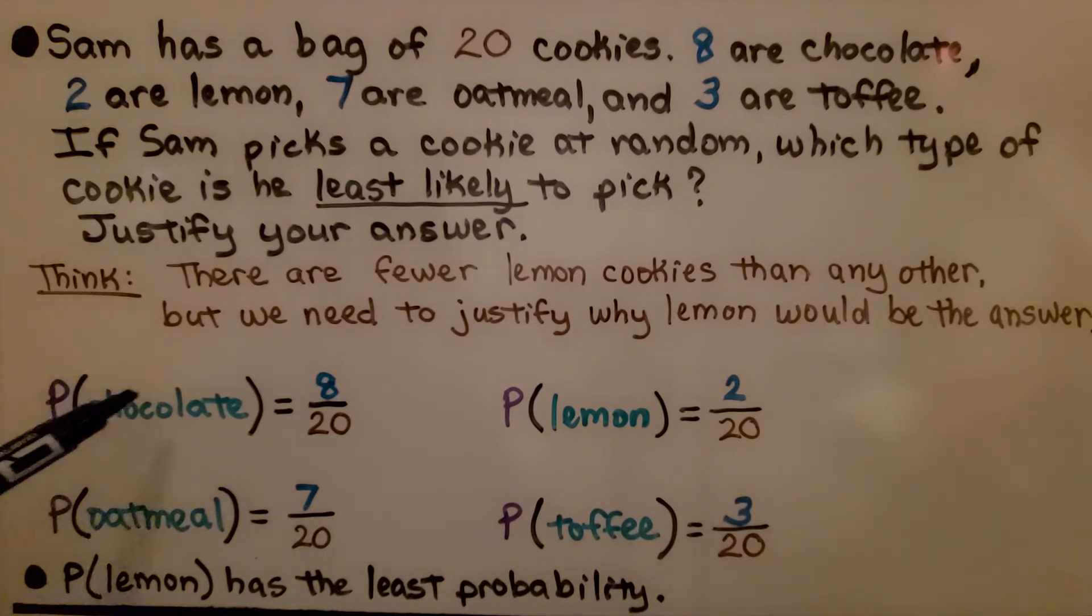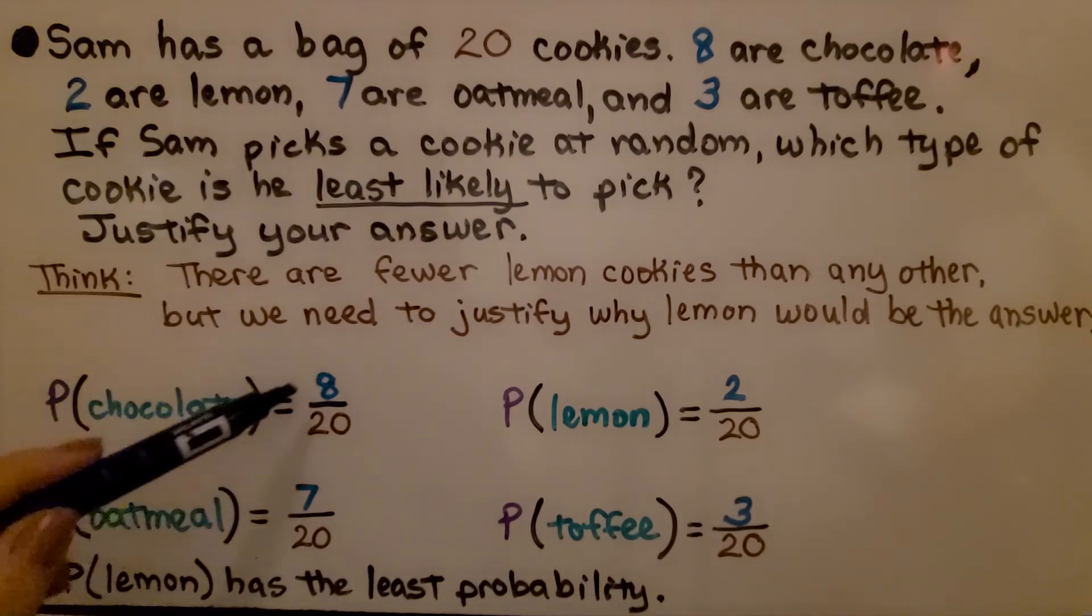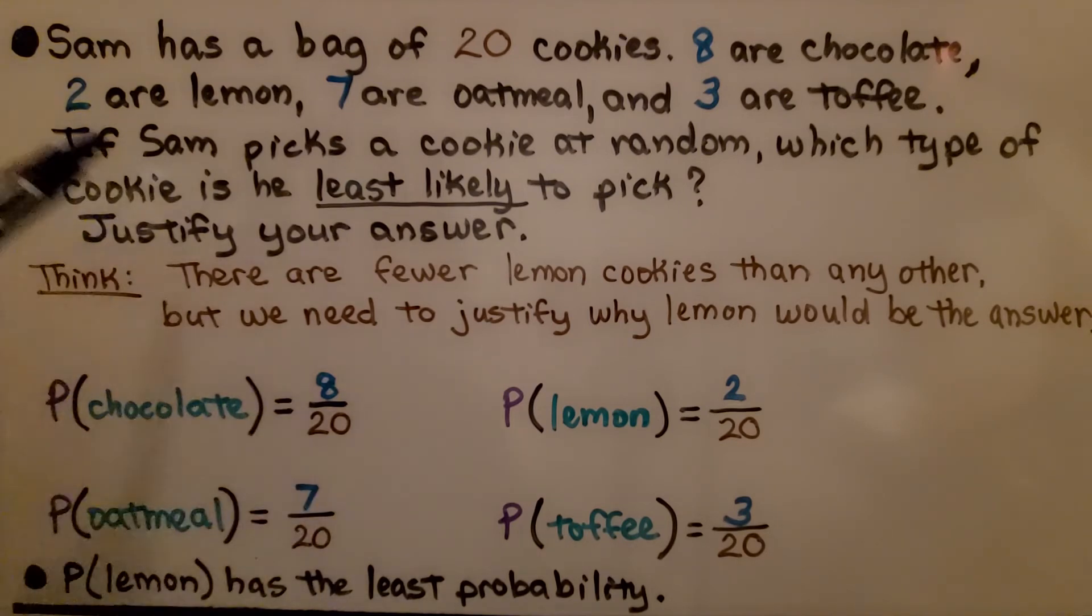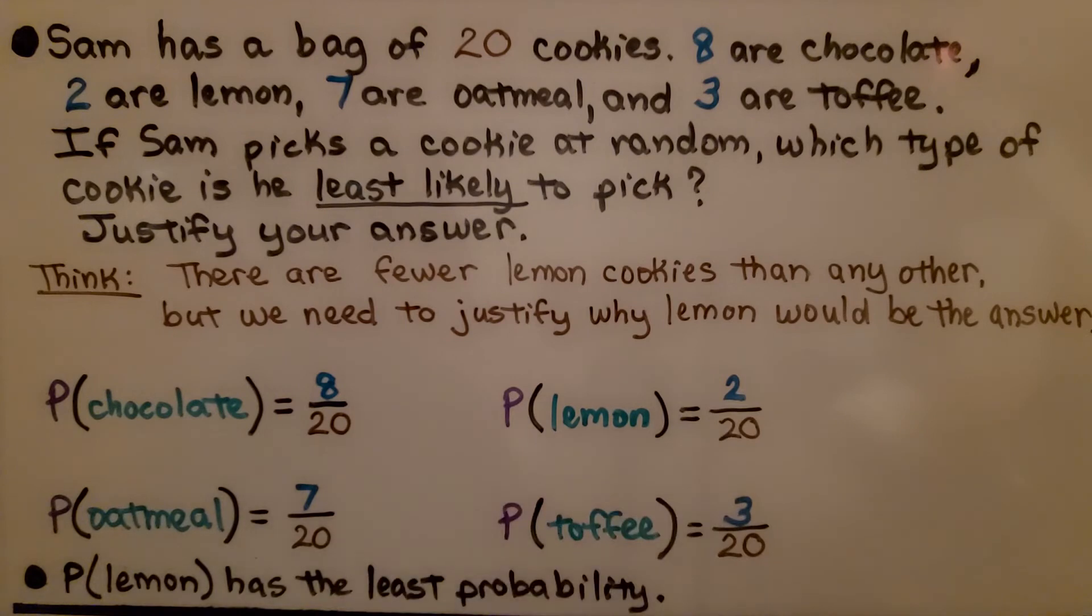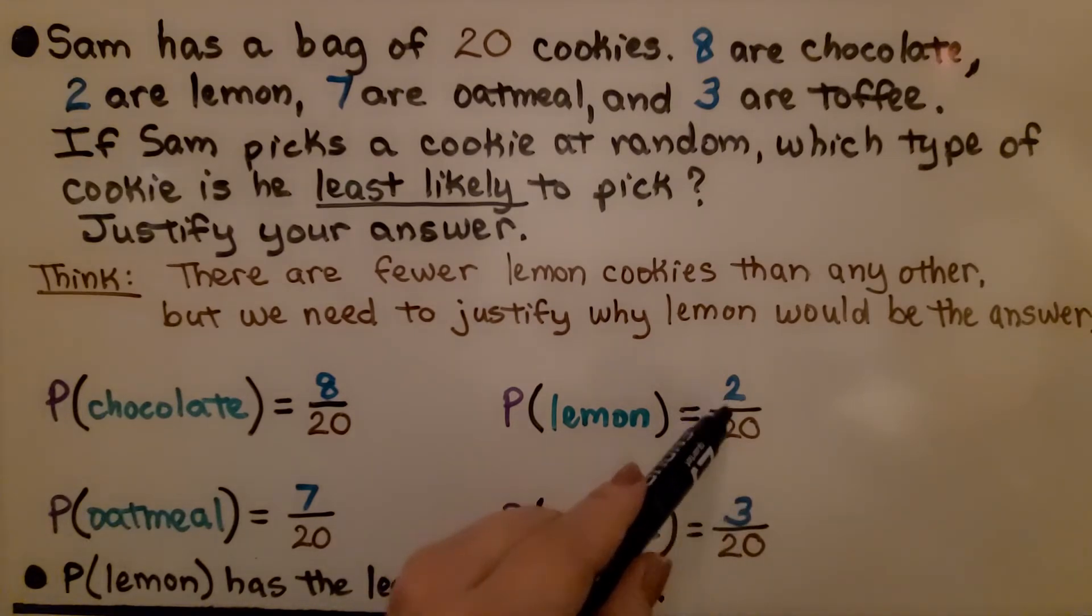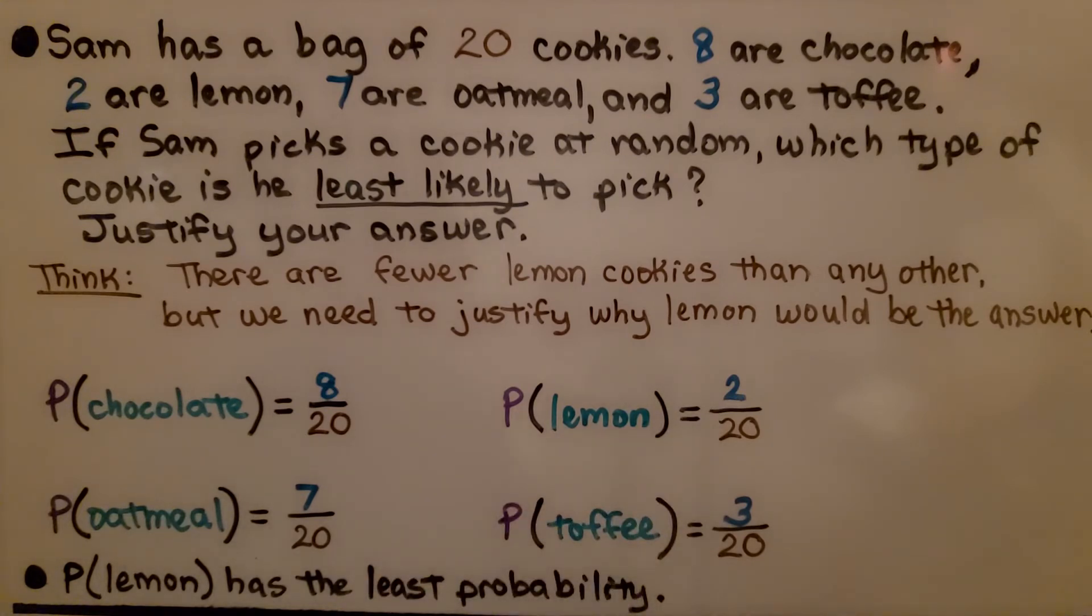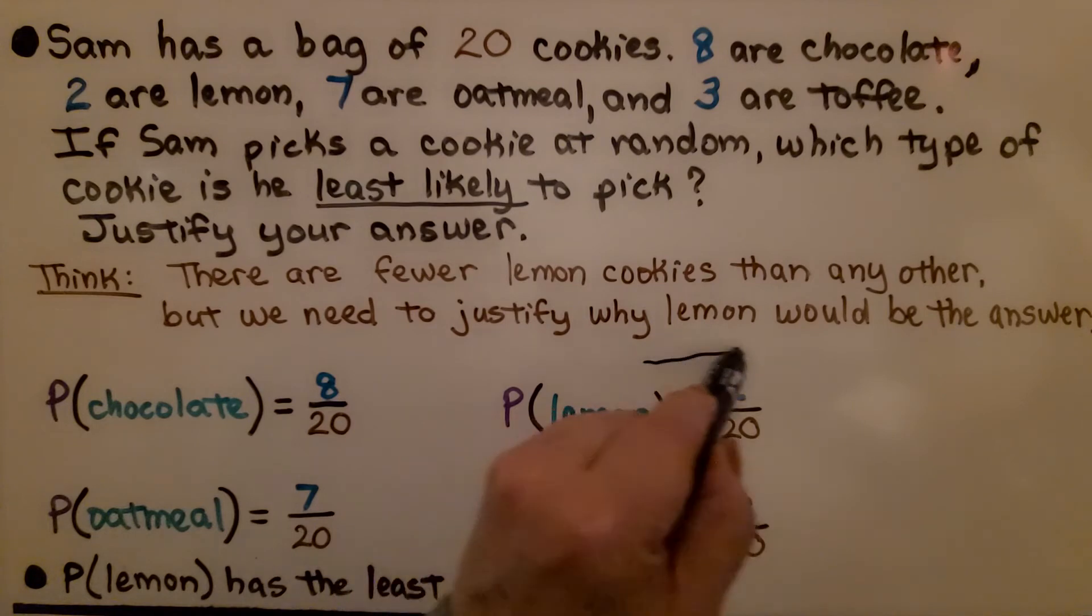The probability of chocolate is eight out of twenty or eight-twentieths. The probability of lemon is two out of twenty or two-twentieths. The probability of oatmeal is seven out of twenty or seven-twentieths, and the probability of toffee is three out of twenty or three-twentieths. We can see that the probability of lemon has the least probability, so it would be lemon.